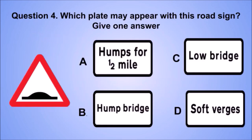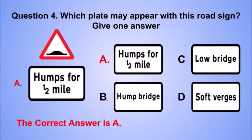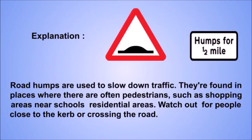Question 4. Which plate may appear with this road sign? The correct answer is A. Road humps are used to slow down traffic and are found in places where there are often pedestrians, such as shopping areas, near schools, and residential areas. Watch out for people close to the curb or crossing the road.